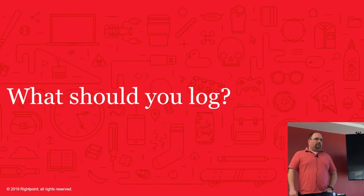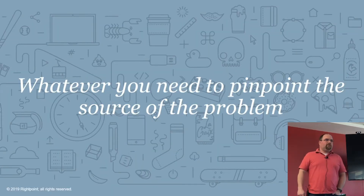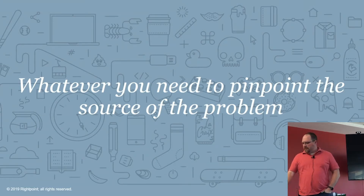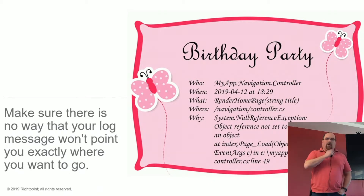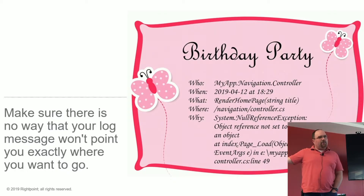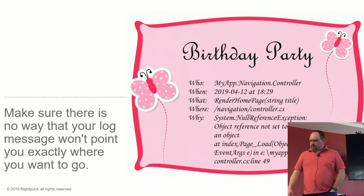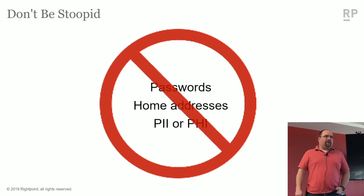So what should you be logging? Whatever you need to pinpoint the source of the problem. Ultimately, logging is going to help you find problems and figure out how to fix them. You want to make sure your log message will point you to exactly where the problem is. In this example, you can see all the line items telling you exactly what file, what method, what line of code, what time - everything you need to say, hey, that's where the problem is. But don't be stupid when you're logging - don't put passwords in there, don't put home addresses, personal health information, or personally identifiable information. Don't do that. Don't put anything in there that you don't want shared with anyone at the company.